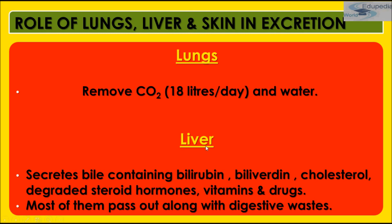Role of liver in excretion: Urea is formed in the liver, which is eliminated through kidneys. Liver cells also degrade the hemoglobin of worn-out red blood corpuscles into bile pigments — bilirubin and biliverdin. Liver cells also excrete cholesterol, certain products of steroid hormones, vitamins, and many drugs. The liver secretes these substances in the bile. The bile carries these substances to the intestine, and they are passed out with feces.